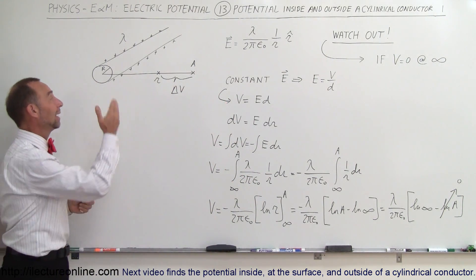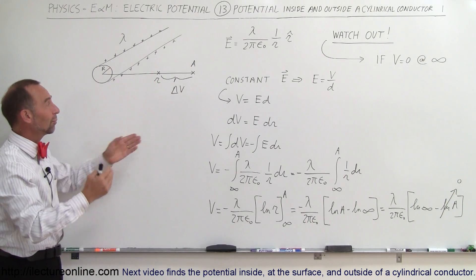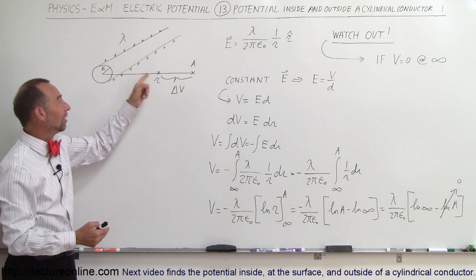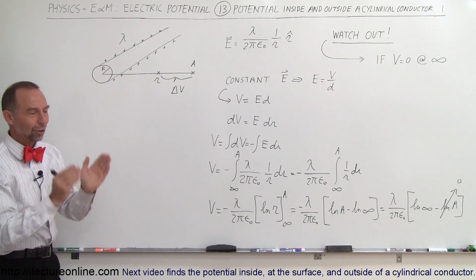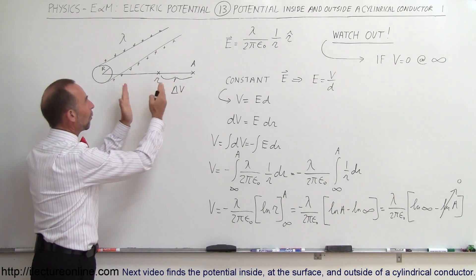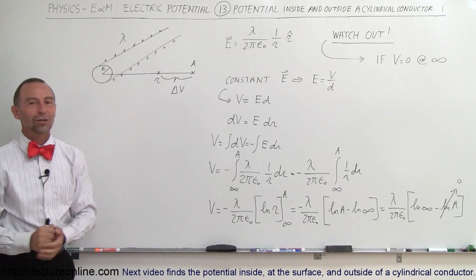Alright, in the next video, I will then go ahead and show the technique by just starting with an arbitrary point away from the cylinder, and then find the potential in reference to it, and that's the only thing we can do. The potential difference between two points away from a cylindrical conductor. Thank you.